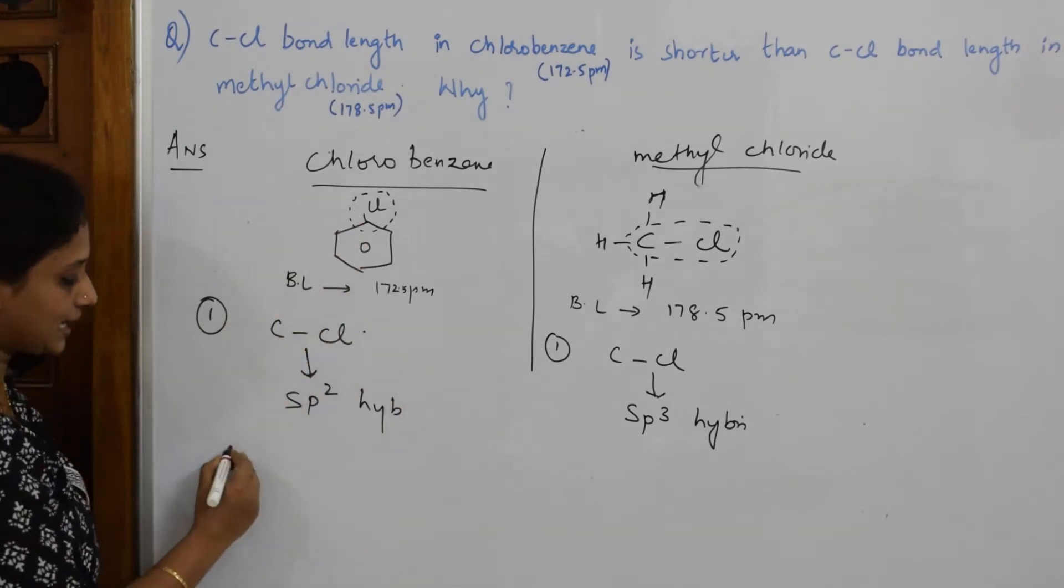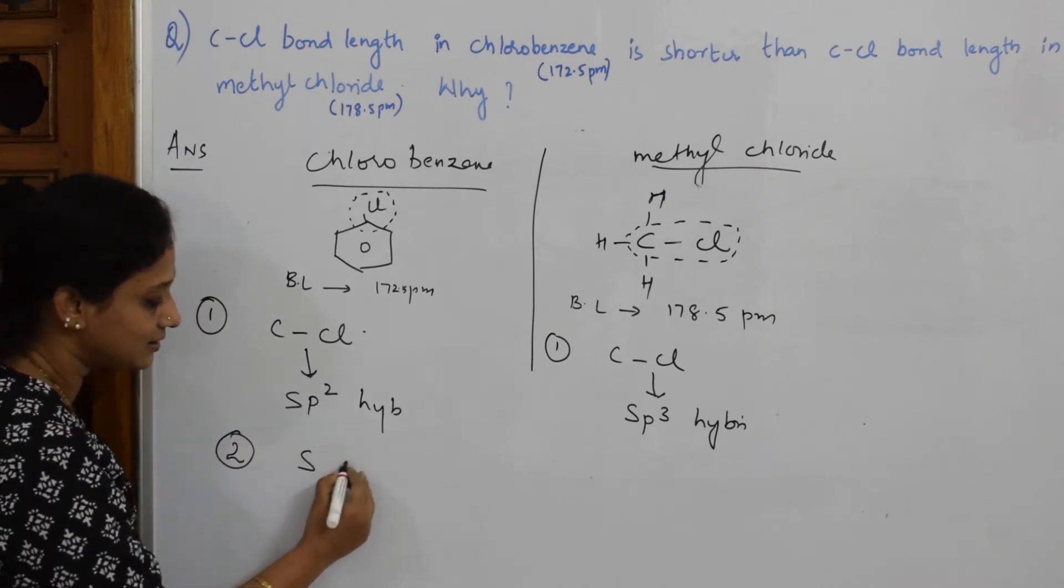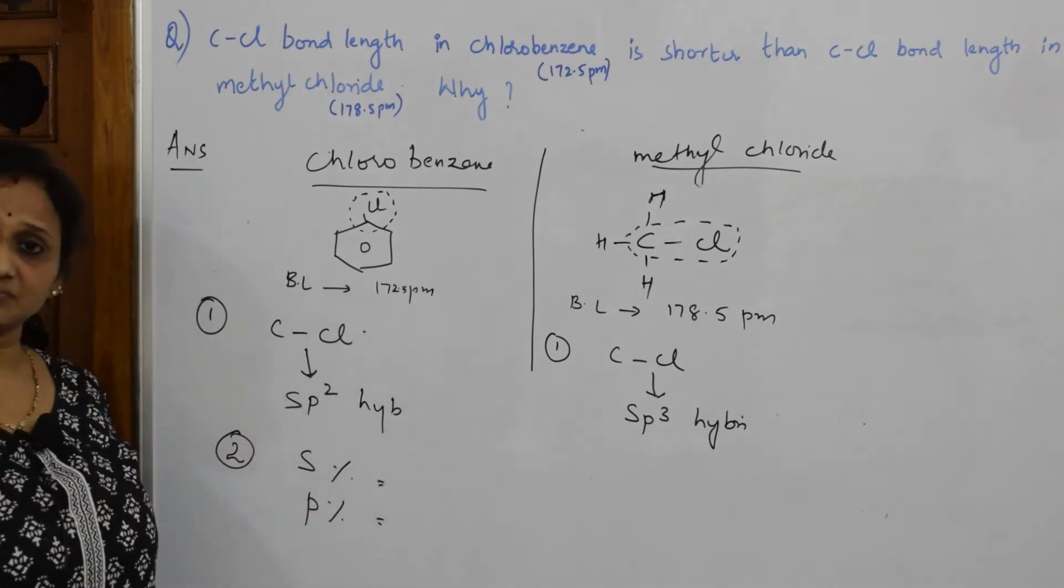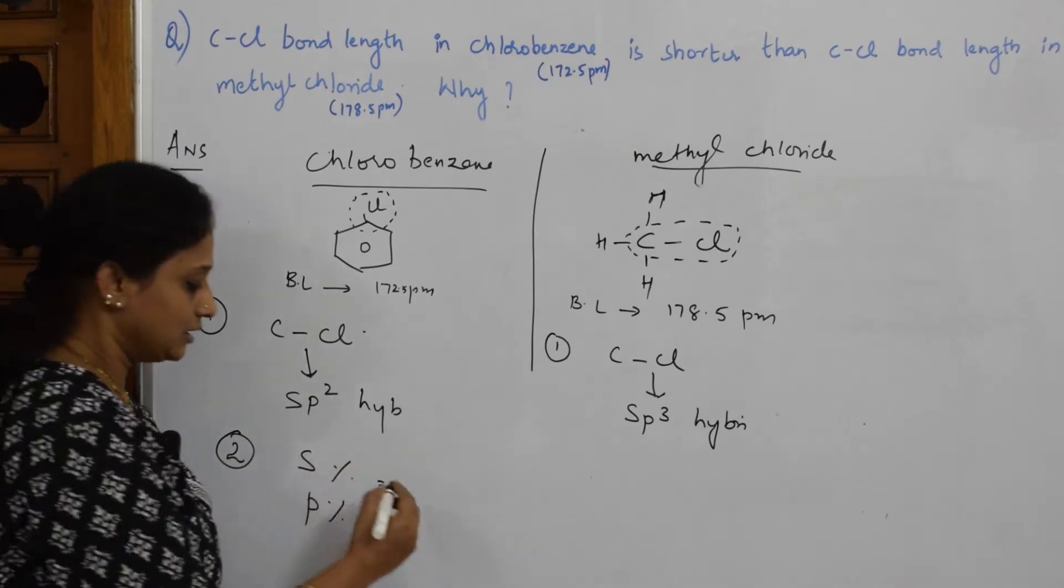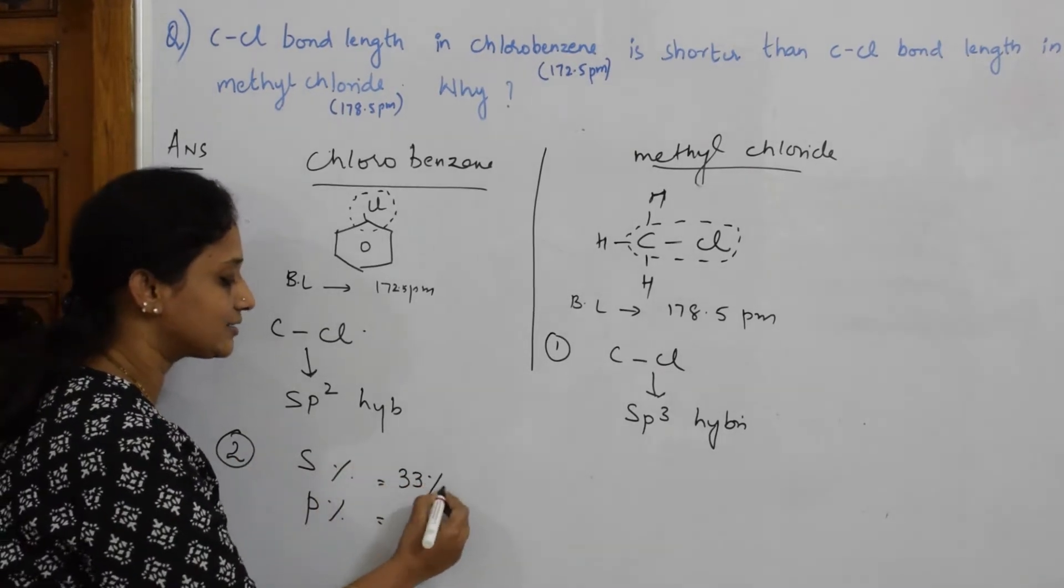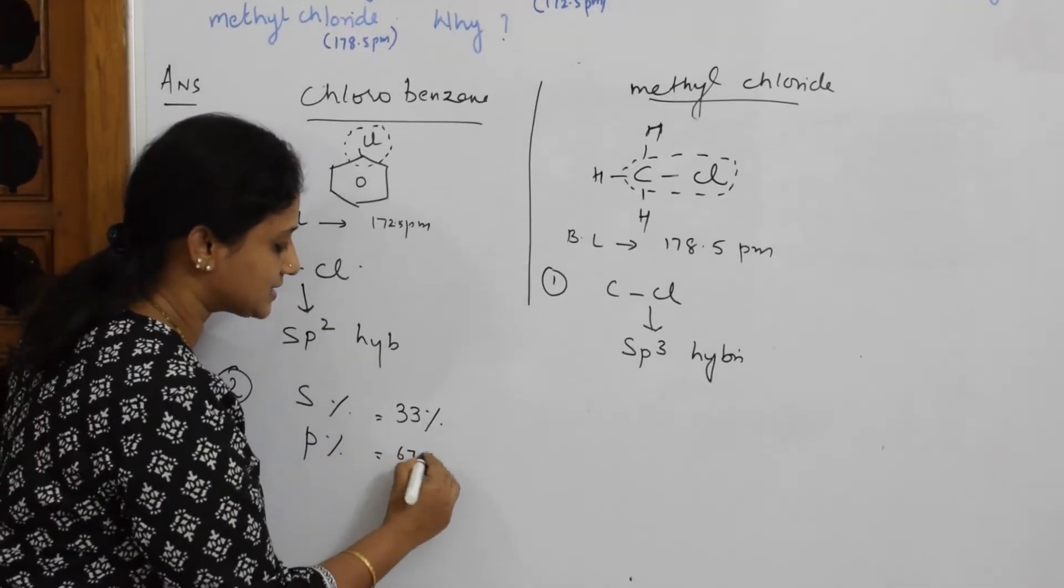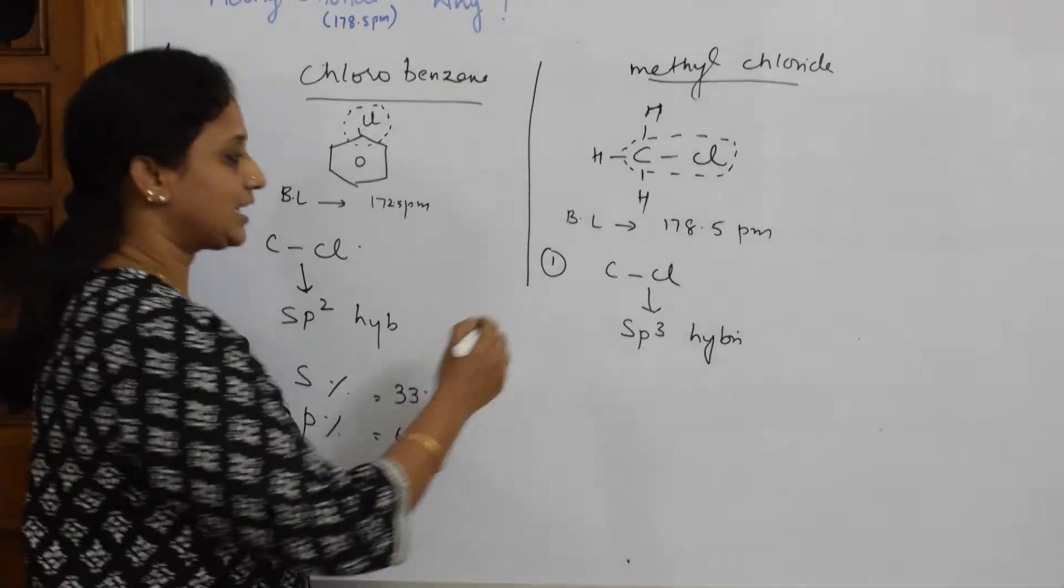So once I write this, I have to write the s character percentage and p character percentage in both. As we know, in sp2 hybridization, the percentage is s character is 33% and 67% of p.